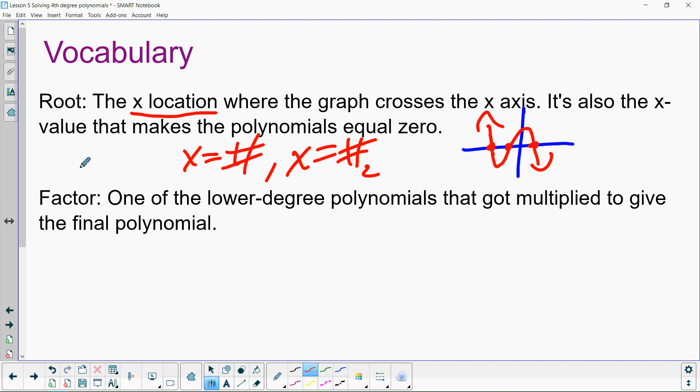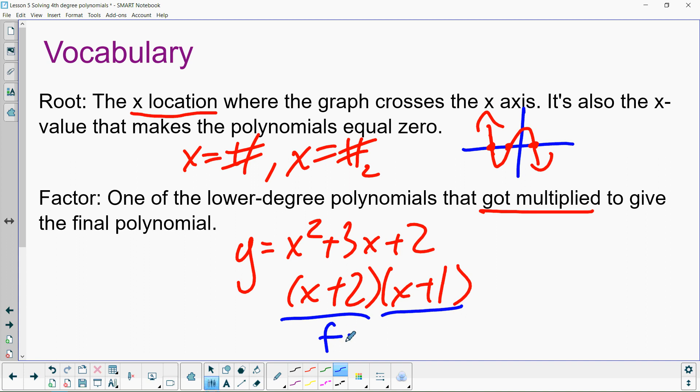The other thing you're going to have to know is what a factor is. I'm going to say factor a bunch because you have to factor a bunch. It's almost like factoring is the most important thing you've learned in algebra 2. The noun factor is one of the lower degree polynomials that got multiplied to give you the final polynomial. So what that means is if you have something like y equals x squared plus 3x plus 2, you can factor this thing to x plus 2 times x plus 1. So we would say that these are factors of that thing.